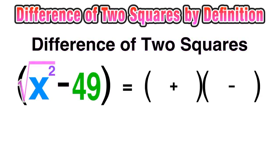So all we have to do is first take the square root of x squared, which is just x since x times x is x squared, and the square root of 49 which is just 7 because 7 times 7 is 49.